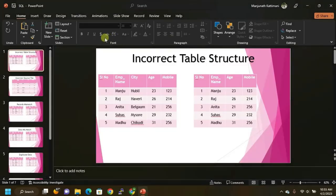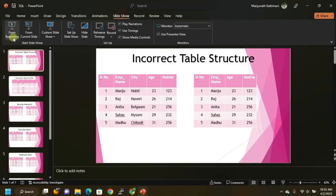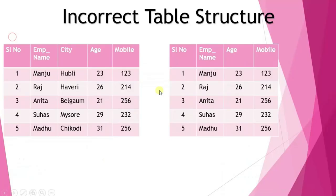So let's start the video. I've made some slideshows. The first one is incorrect table structure, which we call ETL metadata structure validation. Between the source table and target table, we validate the table structure. In the source file you can observe: serial number, employee ID, employee name, city, age, and mobile.